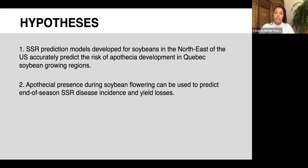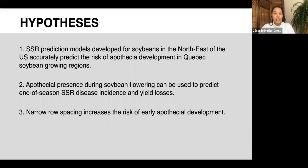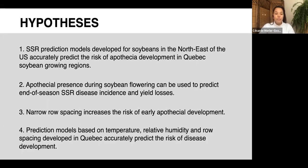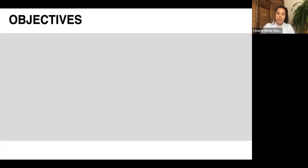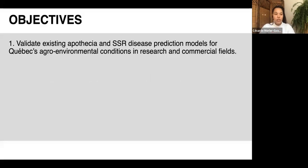Through a series of analyses I'm going to validate several hypotheses. First, that sclerotinia stem rot prediction models developed for soybeans in the northeast United States can accurately predict the risk of apothecia formation under Quebec's conditions. Second, that apothecia presence during the soybean flowering stage can predict disease incidence and yield losses measured at season's end. Third, that narrow row spacing increases the risk of apothecia formation early in the growing season.